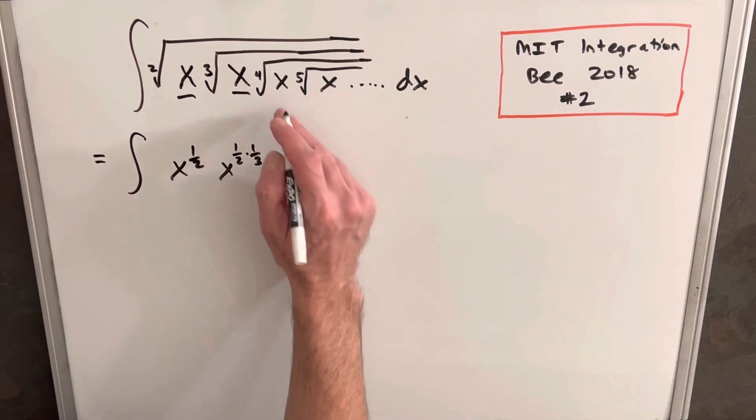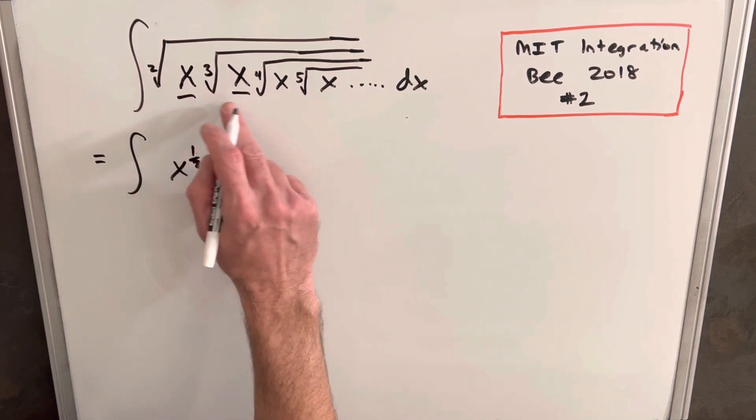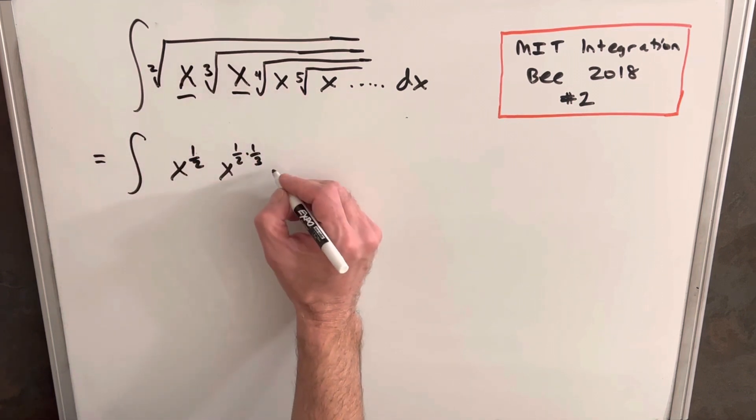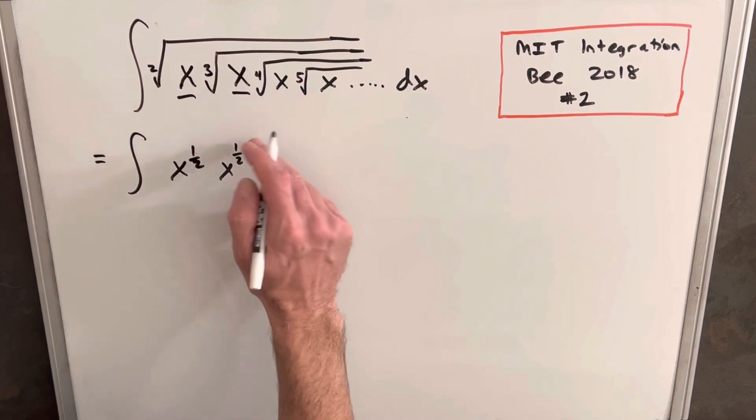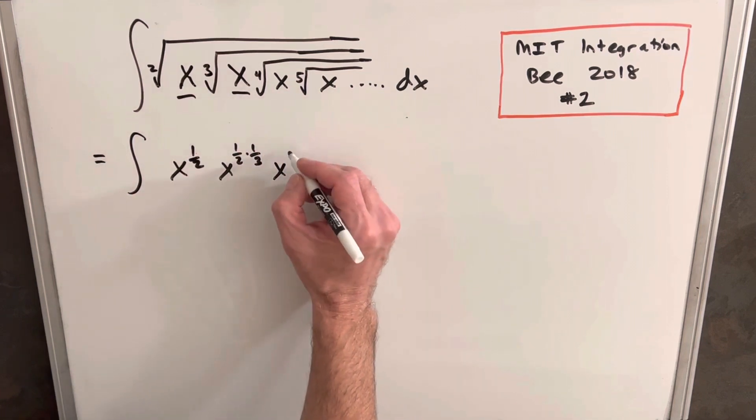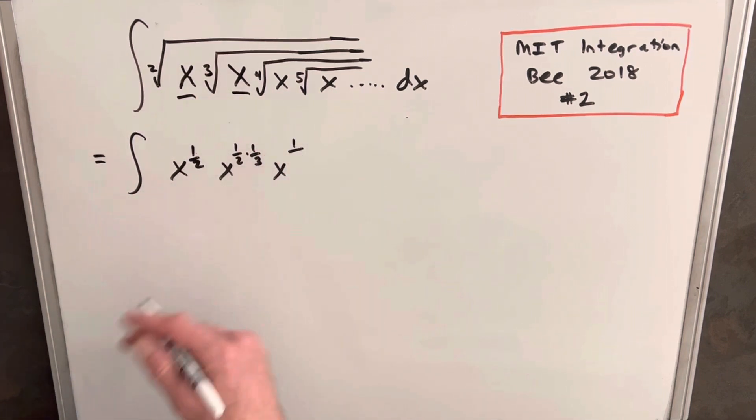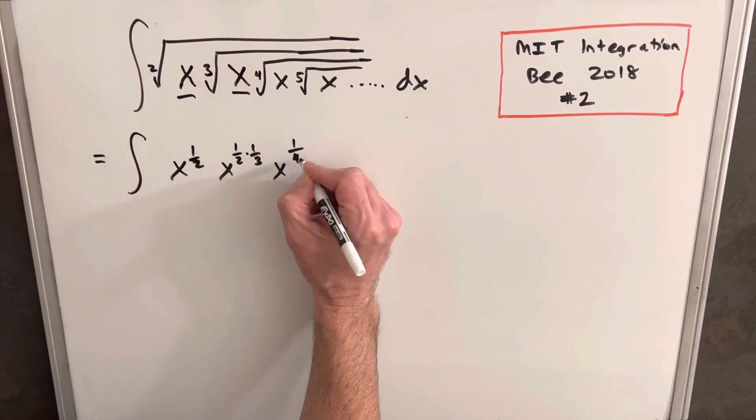Then doing the same thing with the next one, we're within a square root, a cube root, and a fourth root. So we can write that as a half times a third times a fourth. What we can do to make this a little more compact is we can write that as one over four factorial.